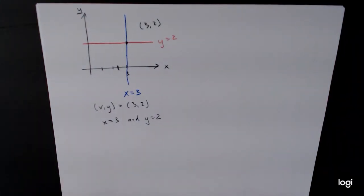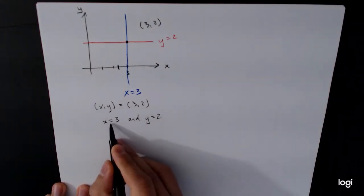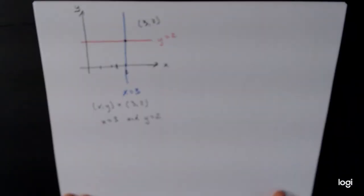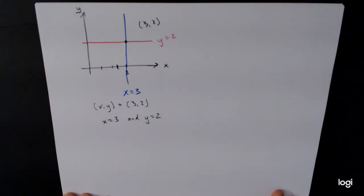And this exactly corresponds to the idea that the coordinate (x,y) is equal to (3,2). This tells us that x equals 3 and y equals 2. And then when you look at points that satisfy this equation here that has both the property that x equals 3 and y equals 2, there is exactly one point that does that, and that is the point (3,2).